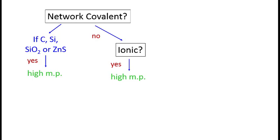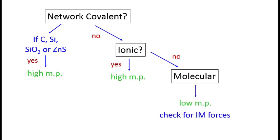If the solid is neither network covalent nor ionic, then we conclude that it is molecular. Molecular solids would have low melting points. We would need to check for the intermolecular forces present, as we did when we were ranking boiling points of liquids, in order to rank these.